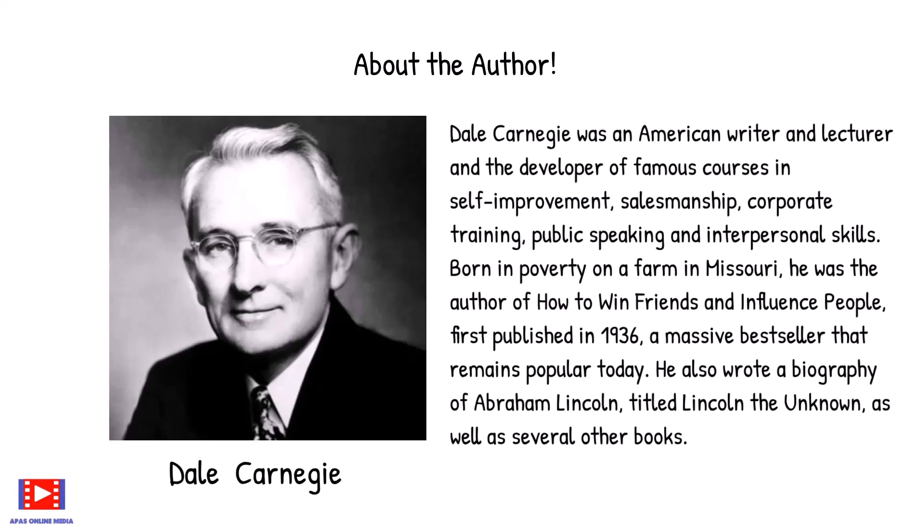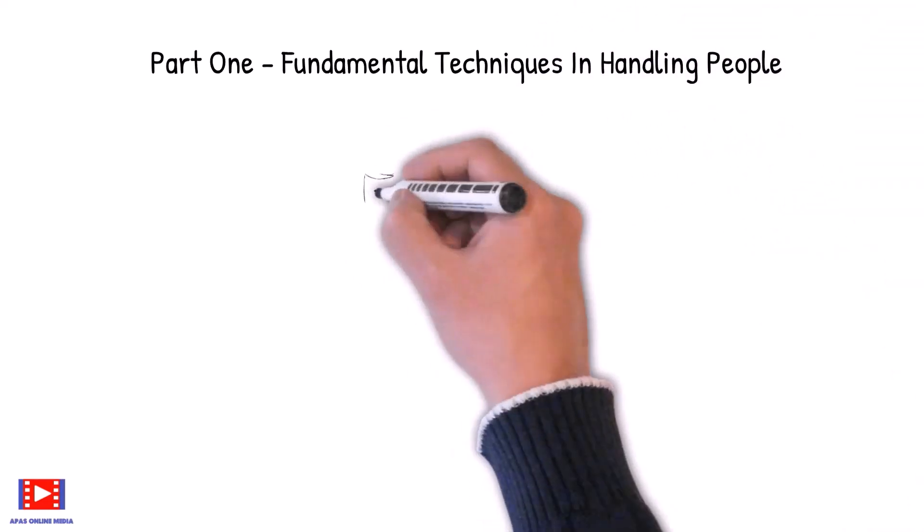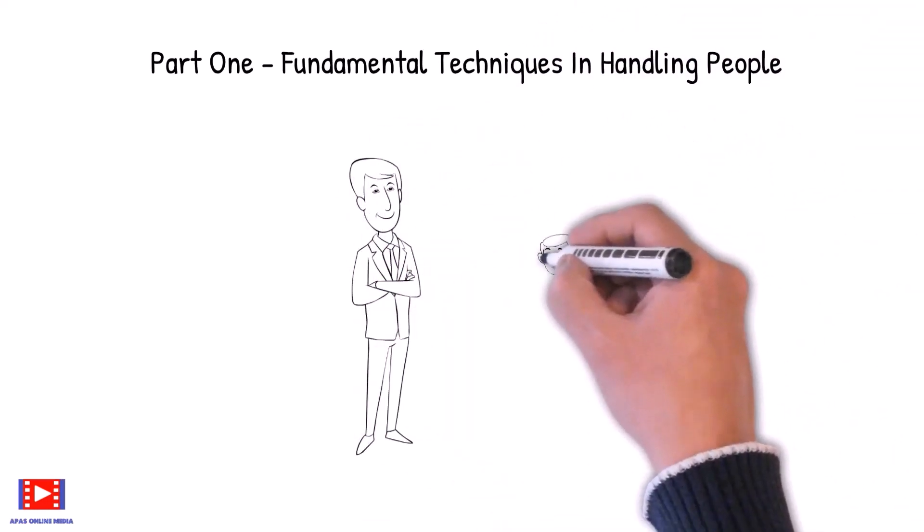Born in poverty on a farm in Missouri, he was the author of How to Win Friends and Influence People, first published in 1936, a massive bestseller that remains popular today. He also wrote a biography of Abraham Lincoln titled Lincoln the Unknown as well as several other books.